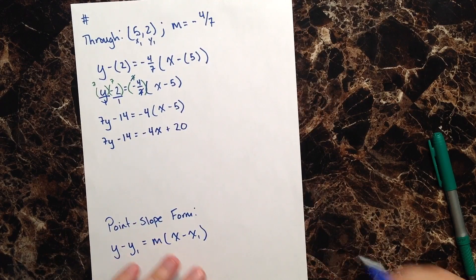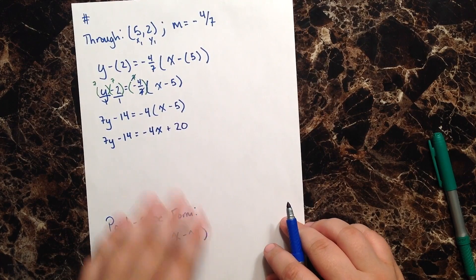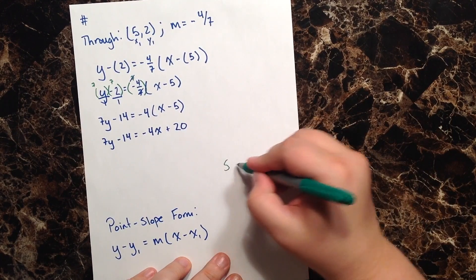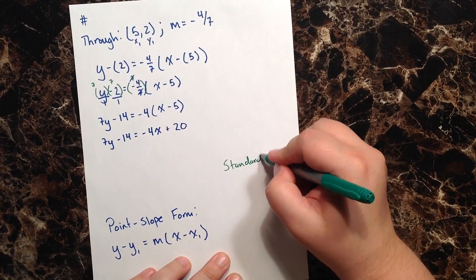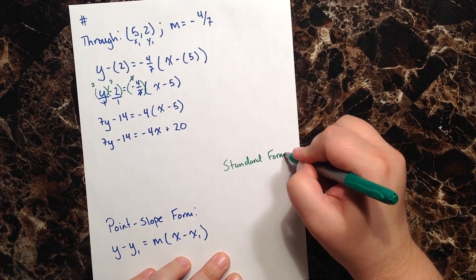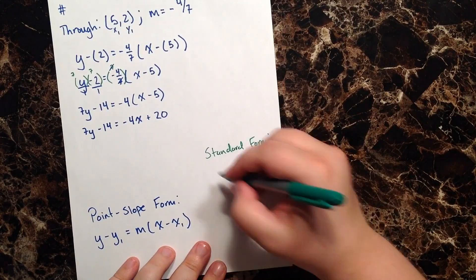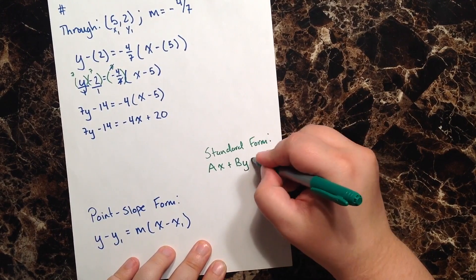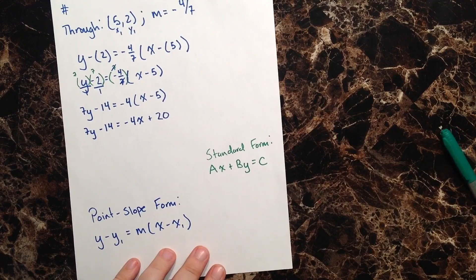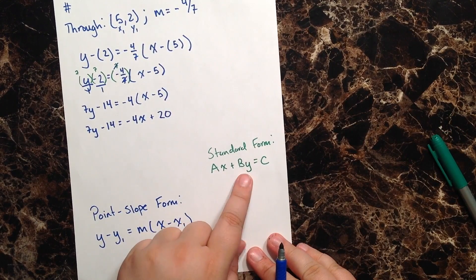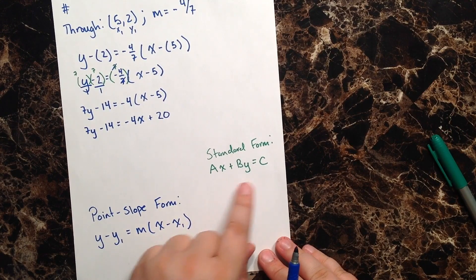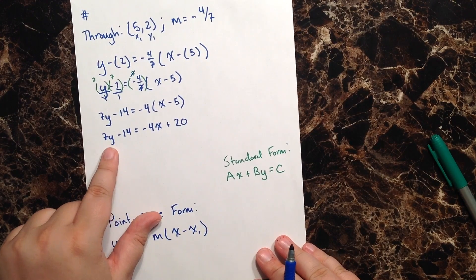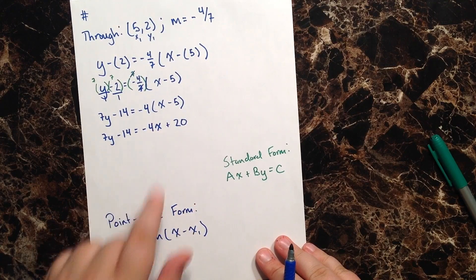And now if we go back to the directions, they say that they want us to write this equation in standard form. And we've already reviewed a little bit of standard form, but we'll go ahead and rewrite what standard form is here. So standard form: my x and my y are on one side of the equation, and my constant is on the other.